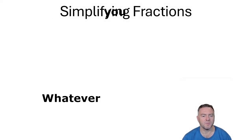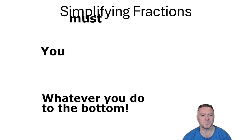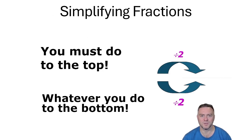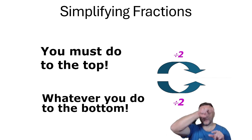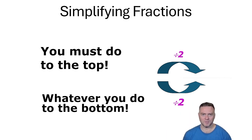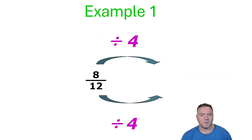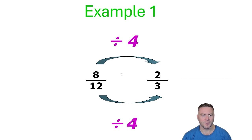So when we're simplifying fractions, whatever you do to the bottom you must always do to the top. If you divide the bottom by 2, divide the top by 2 — it's a simple rule so that they remain equivalent. So with the original example of 8 out of 12, we divide both the top and bottom by 4, which gives us 2 out of 3.